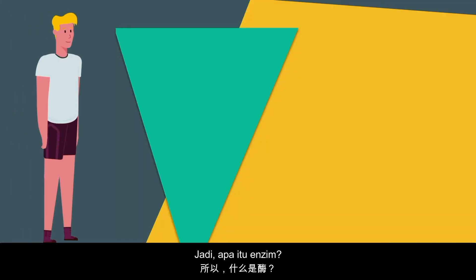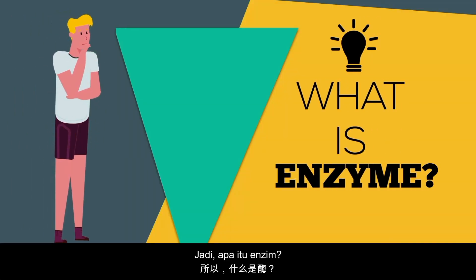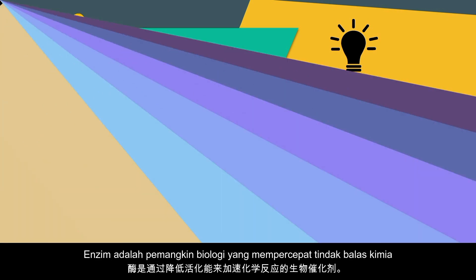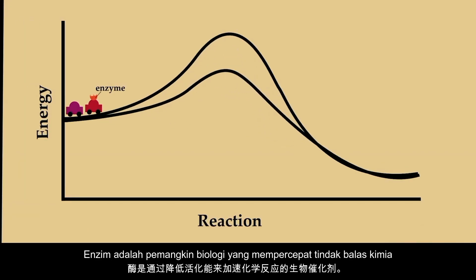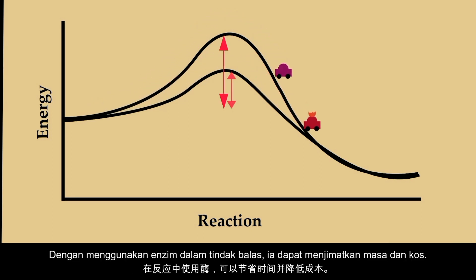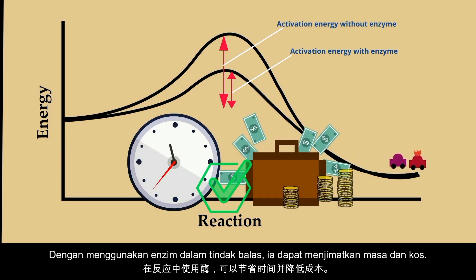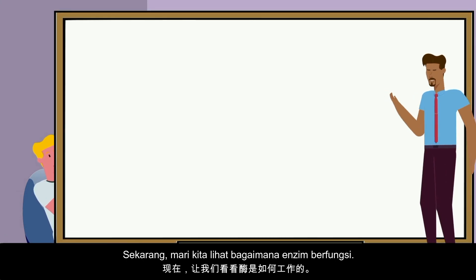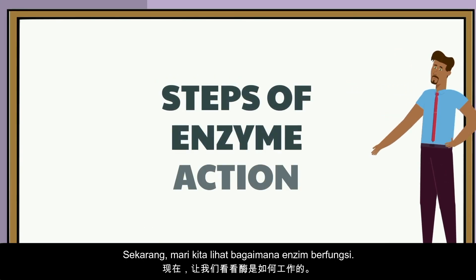So what is an enzyme? An enzyme is a biological catalyst that speeds up a chemical reaction by lowering the activation energy. By using enzymes in the reaction, it saves time and reduces cost. Now let's see how the enzymes actually work.